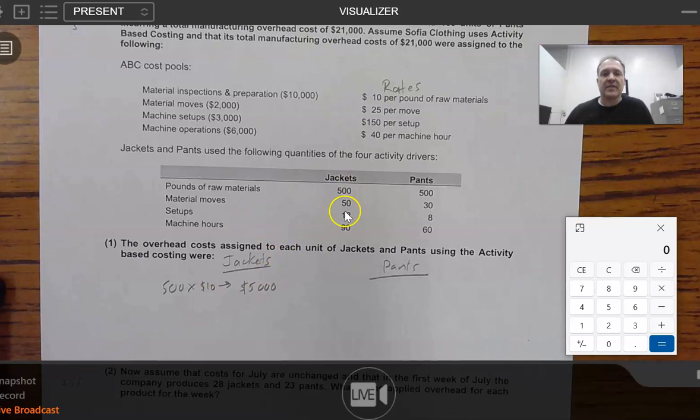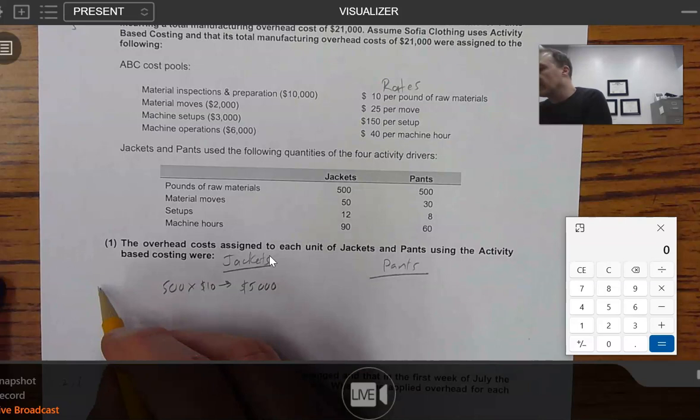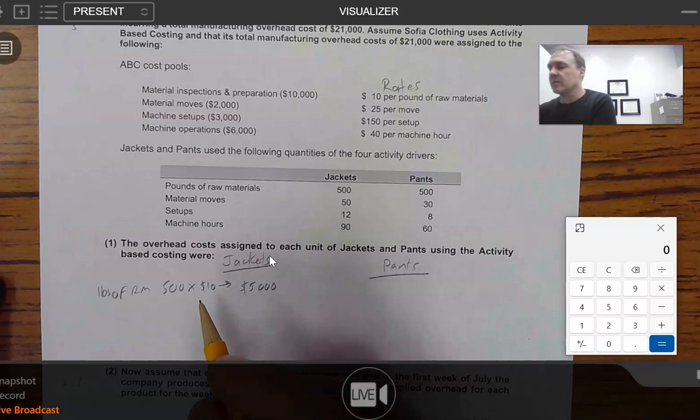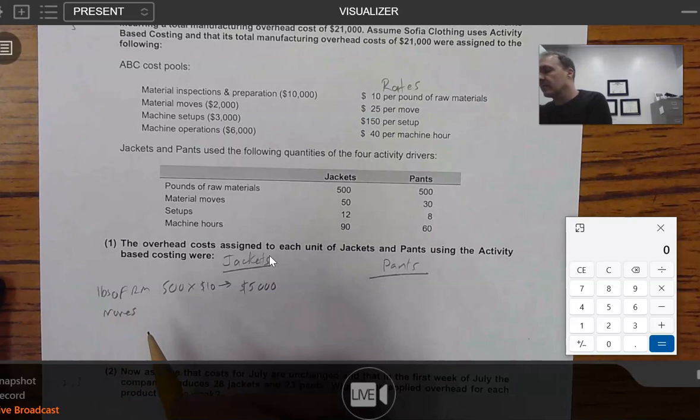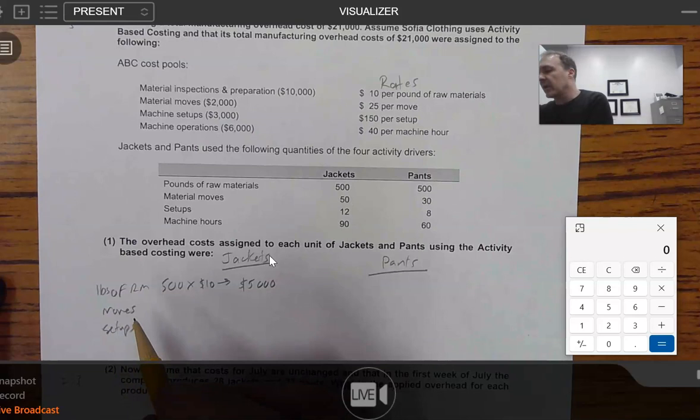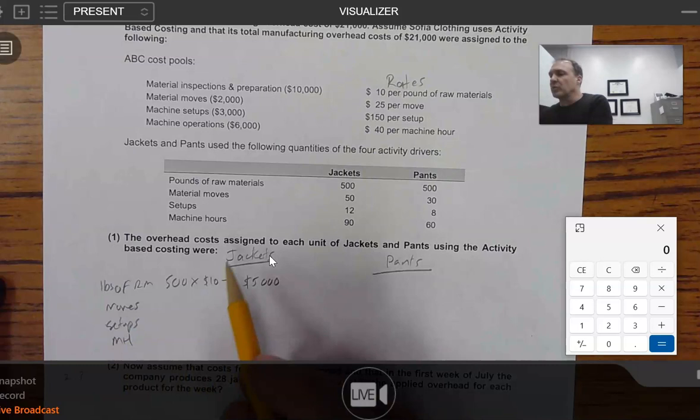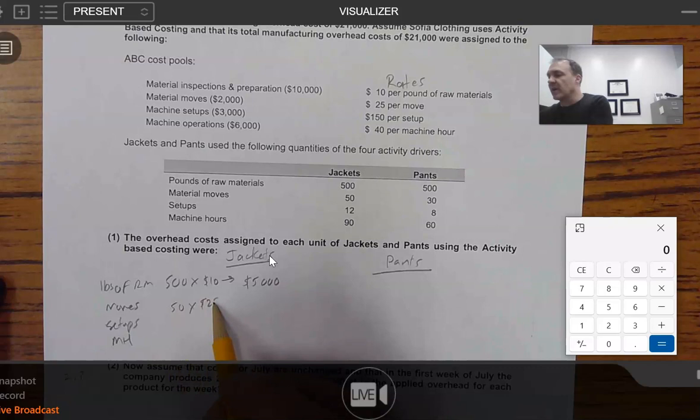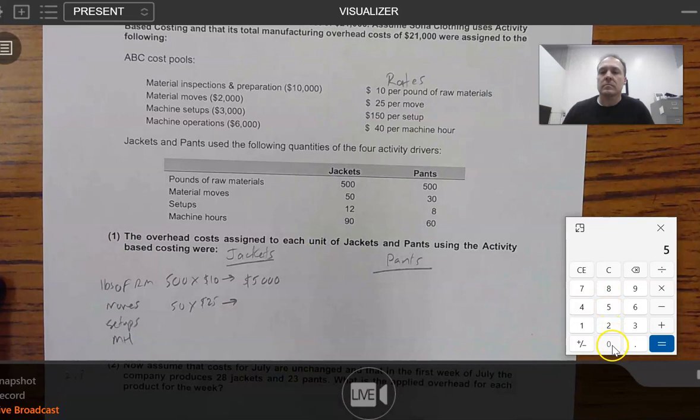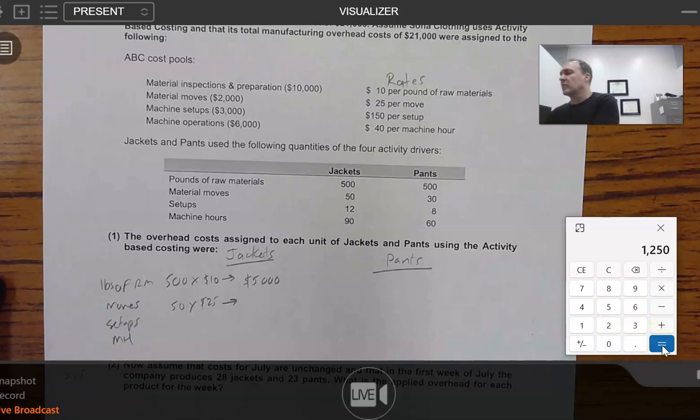So, material moves. We've got 50 of them for jackets, times $25. So let me go here, and that's pounds of raw materials. We're going to have moves, we're going to have setups, and we're going to have machine hours. All right. So, material moves, we've got 50 of them times our rate of $25. So, that's $1,250.